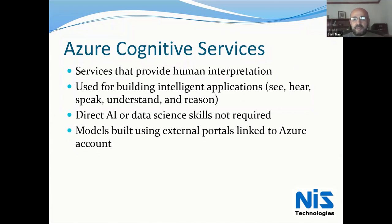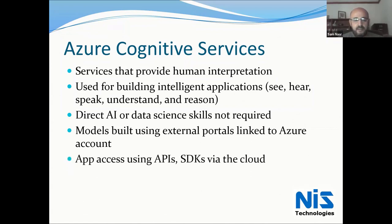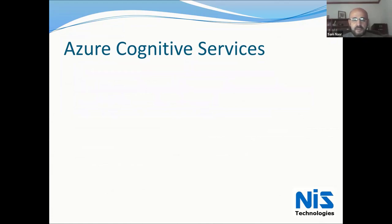The models are built using external portals linked to the Azure account. First, I need to set up an Azure account, and then depending on which service I'm using, I'll use an external site to help build that model. For example, if I'm using the Custom Vision service, I set up an account in Azure, then go to customvision.ai, set up my model, train it, and use it in my application. Access to the services can be done through a REST API or through an SDK that I can download — it makes the REST API call on the back end. Either method works; essentially we're going up against the cloud, specifically Azure.